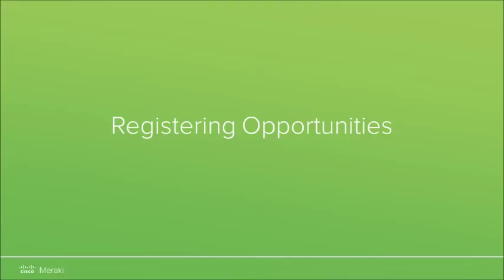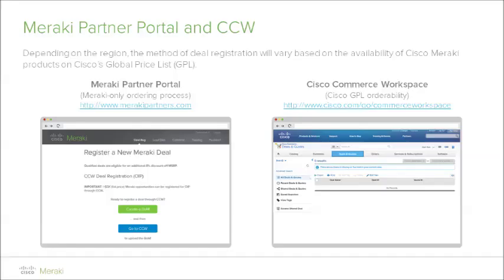Registering Opportunities. At Cisco Meraki, we pride ourselves on an aggressive deal registration program to reward our partners for uncovering opportunities in the marketplace. Depending on the region, the method of deal registration will vary based on the availability of Cisco Meraki products on Cisco's global price list, the GPL. The Cisco Commerce Workspace, or CCW, is the platform that Cisco partners and distributors use to register deals, request special pricing, and place orders for products listed on Cisco's GPL.